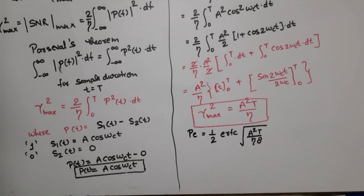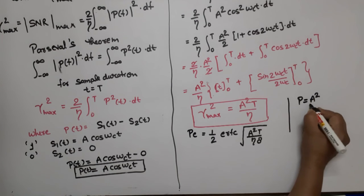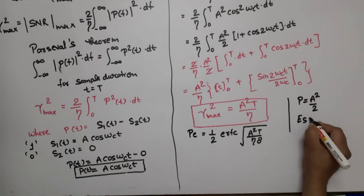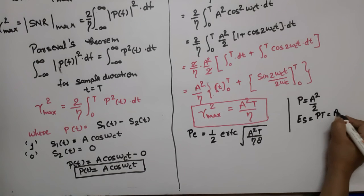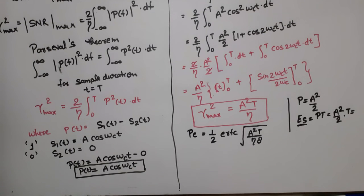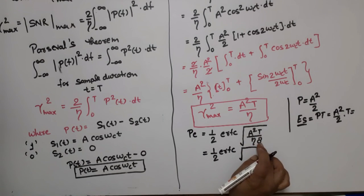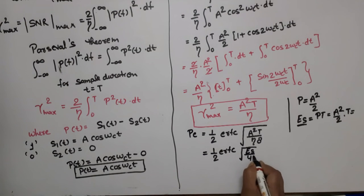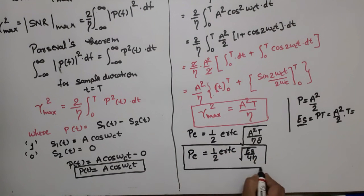Now, from the constellation diagram, we found that the power of the signal is equal to A²/2, and Es — the signal energy — is equal to P times T. This means A²/2 times T equals the signal energy Es. Replacing A²T with 2·Es, the probability of error equation becomes one-half times erfc of the square root of Es divided by (4·eta). This is the probability of error for an ASK signal.